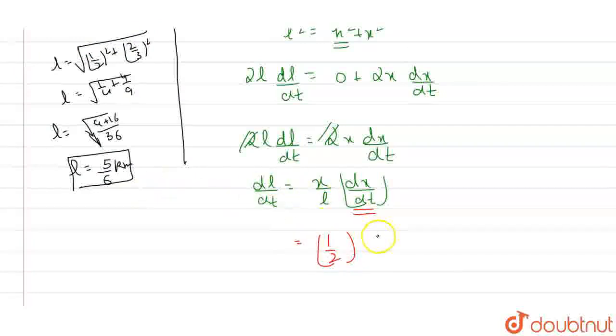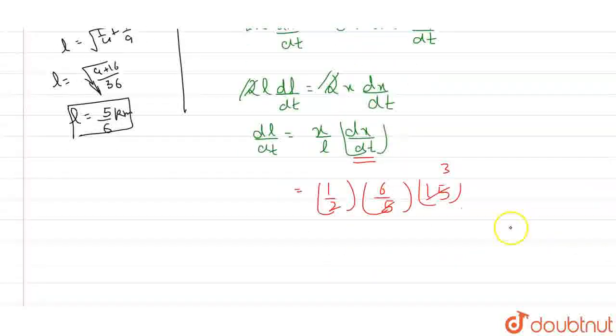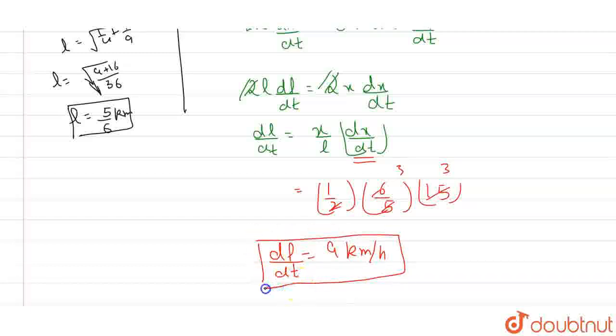What is the value of l? 5 by 6. But here 1 by l is required, so it will become 6 by 5, and dx by dt is 15. So this will become 1 by 2 times 6 by 5 times 15, so our answer will come out as 9 km per hour is our dl by dt or the rate we are looking for.